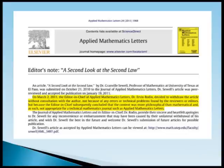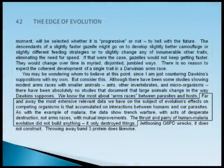The article was reviewed and accepted, but about a week before it was to be published, Dr. Sewell received a letter informing him that it had been withdrawn because our editors simply found that it does not consist of the kind of content that we are interested in publishing. The journal later published a formal apology, acknowledging that it was withdrawn not because of any errors or technical problems found by the reviewers or editors, but because the editor-in-chief subsequently concluded that the content was more philosophical than mathematical. However, that natural selection is capable of creating such order is now doubted by a growing number of scientists.